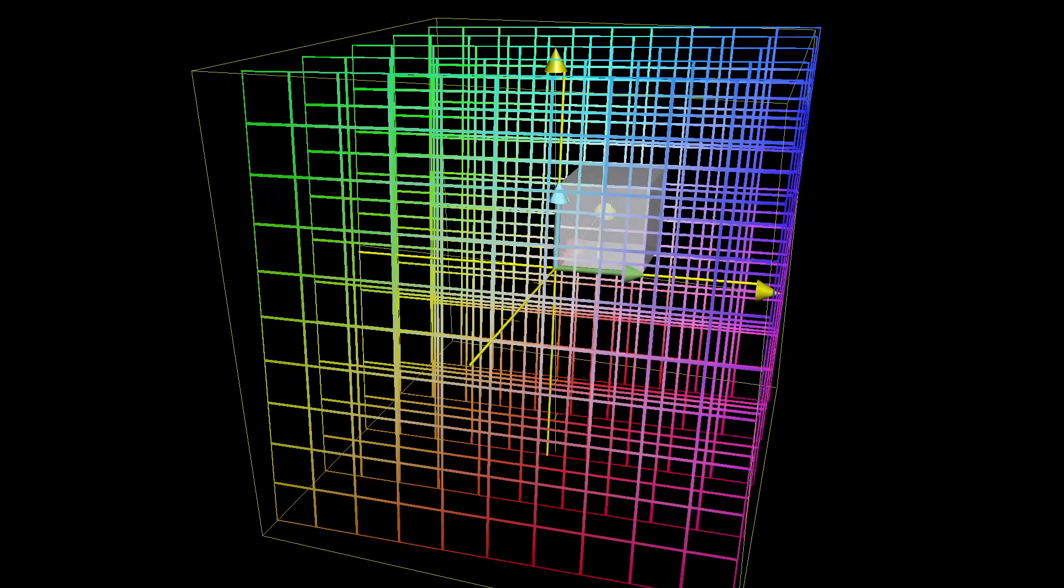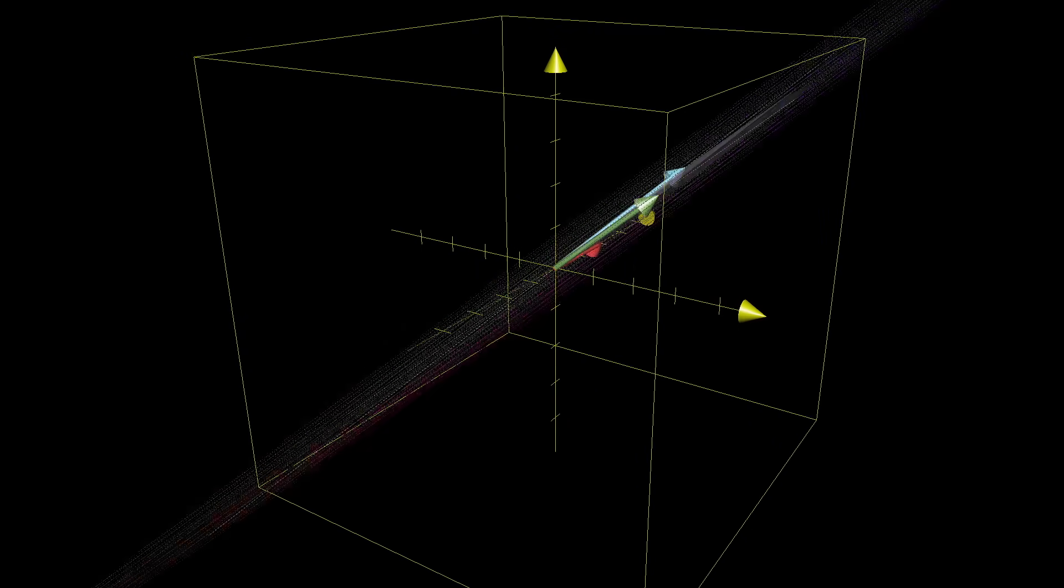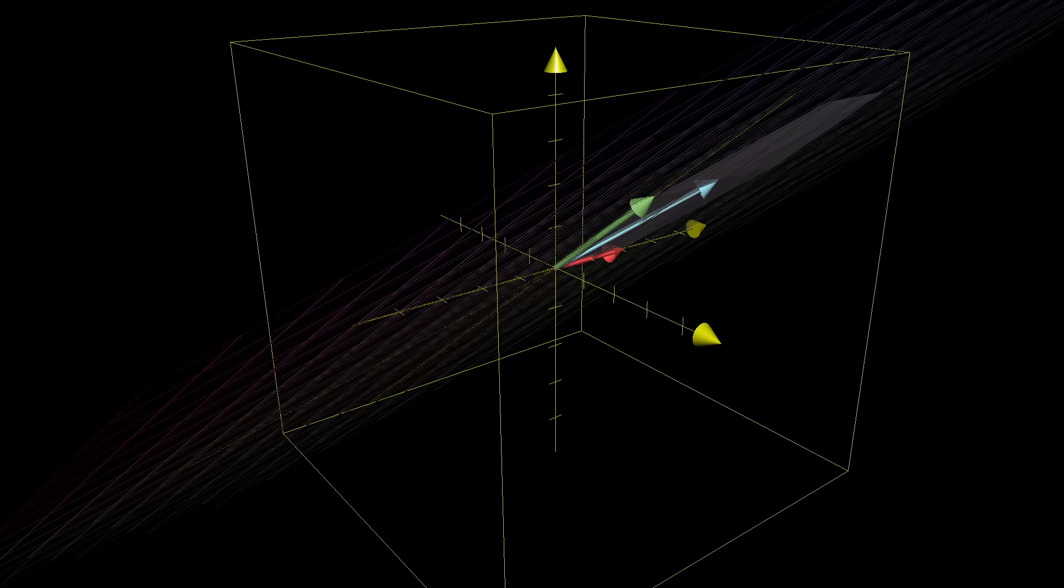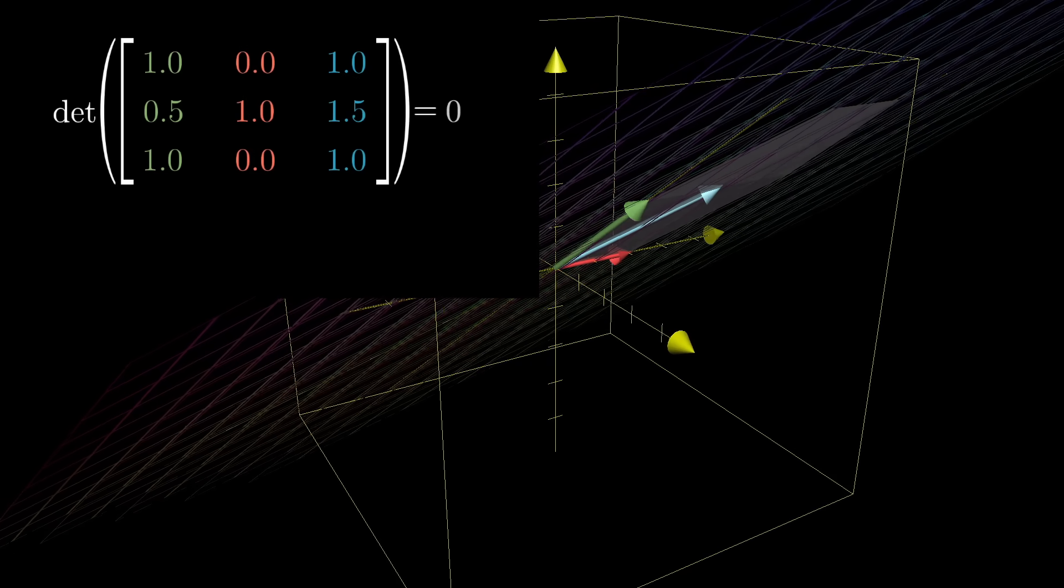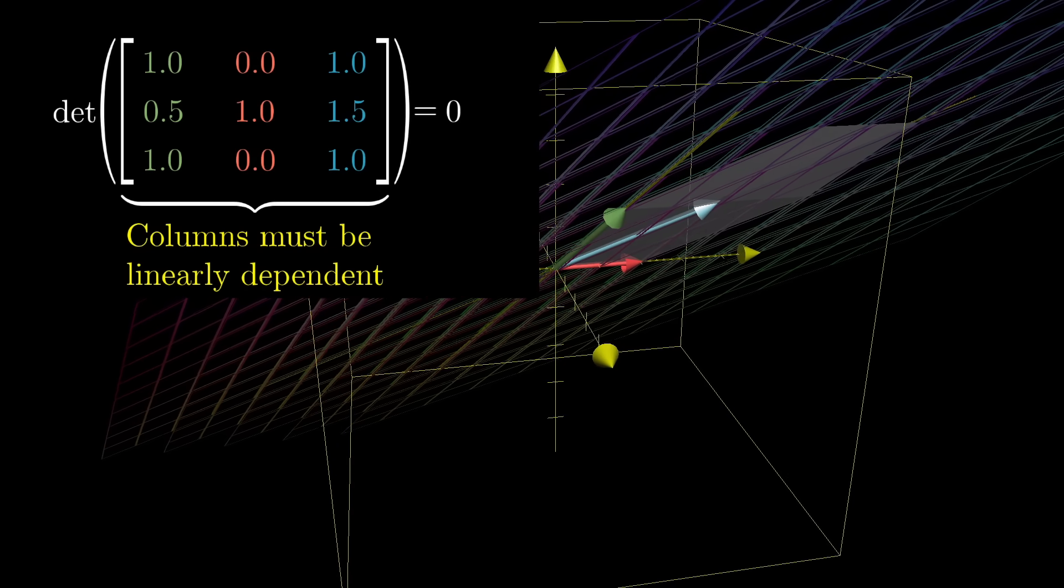A determinant of zero would mean that all of space is squished onto something with zero volume, meaning either a flat plane, a line, or, in the most extreme case, onto a single point. Those of you who watched chapter 2 will recognize this as meaning that the columns of the matrix are linearly dependent. Can you see why?